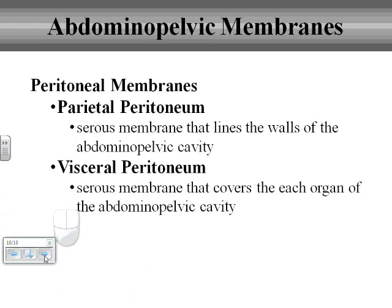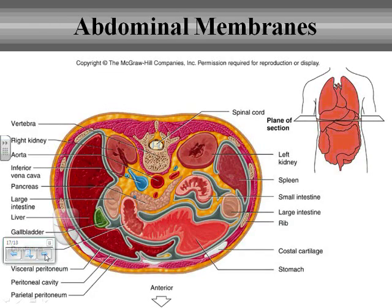For the abdominal pelvic membranes, we have the peritoneal membrane, which really lines all of those organs. It's kind of a large membrane system, demonstrating how we have all of our different organs with various membranes in various locations doing their specific jobs, providing that cushioning support. We have the visceral peritoneum versus the parietal peritoneum, covering all the different organs within the abdominal pelvic cavity.